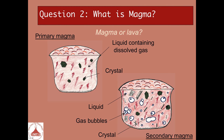You can note that we have the crystals formed at depth earlier, and new crystals that form near the surface — typically plagioclase, for example.